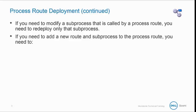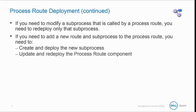If you need to add a new route and subprocess to the process route, you need to create and deploy the new subprocess. You also need to update and redeploy the process route component. You do not need to modify or redeploy the parent process.